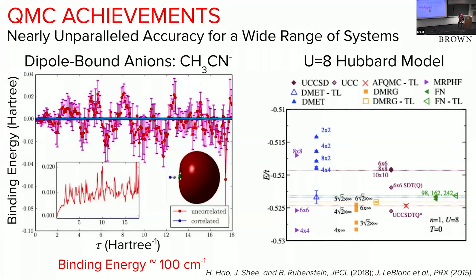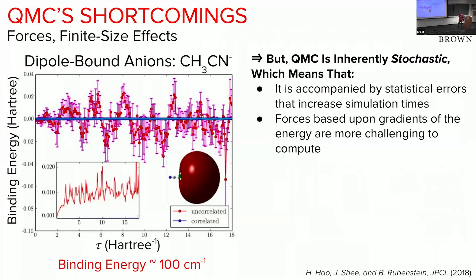In condensed matter physics, people have also known this. Picking out an example from the recent Simons benchmarks, they show that AFQMC is well within the accuracy of a variety of other many-body methods for describing the Hubbard model, which is a historically difficult model to describe. So we know that AFQMC can be accurate. It has become a benchmark method for many different systems.